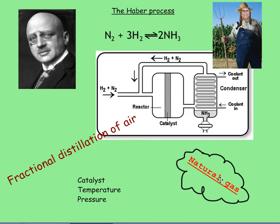And the hydrogen comes from natural gas. Because also in that topic in year 10, we learned about gas — which is CH₄, that's methane. And it comes from there. So they get the hydrogen from natural gas and nitrogen from fractional distillation of air.